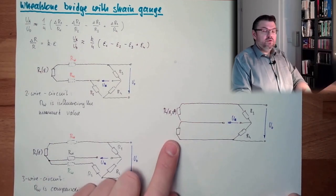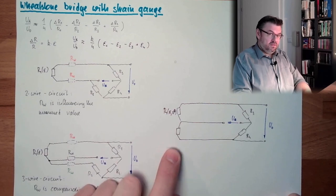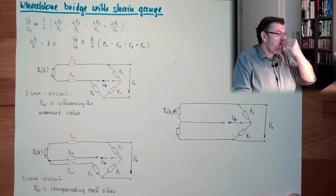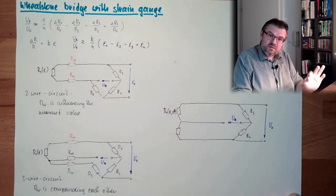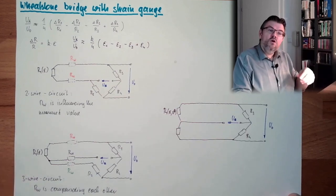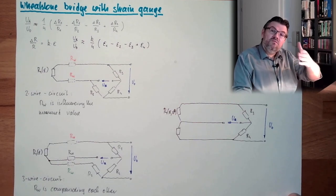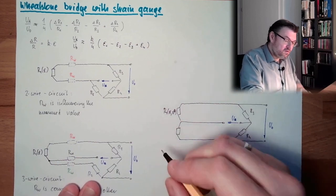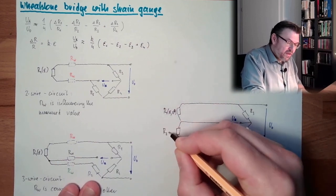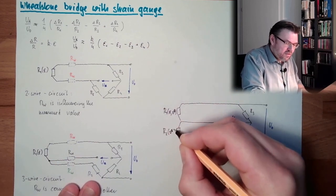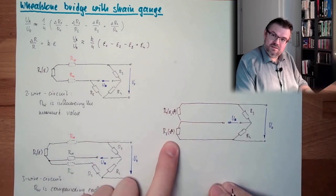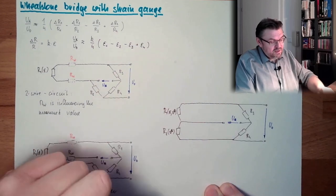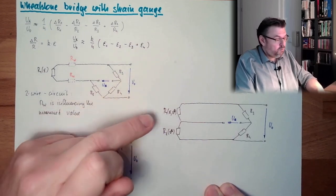And here I mount another strain gauge as R2 — also a strain gauge, however placed at the same material with the same temperature but without mechanical stress. I need a small plate of the same material, which gives the heat strain but no mechanical load. R2 has no mechanical stress — only temperature is influencing this strain gauge. Now the heat is influencing R1 positively.